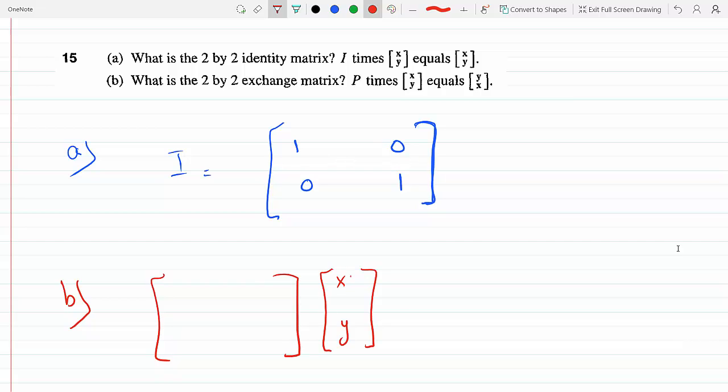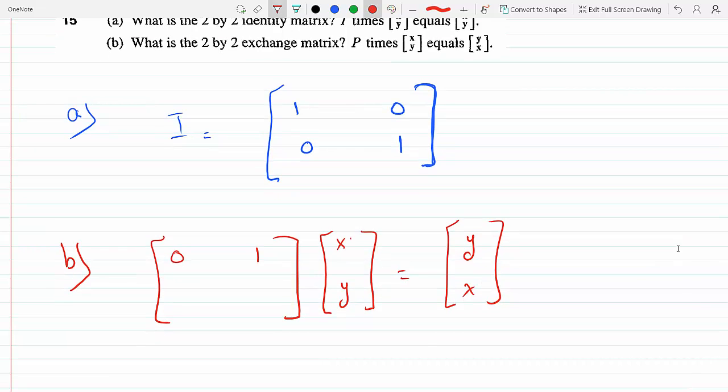Well, I'm supposed to get Y here, so the way I would get a Y is if I would multiply X by 0 and Y by 1, because the way matrix multiplication goes is row by column. So I would get Y, and below I need an X, so...